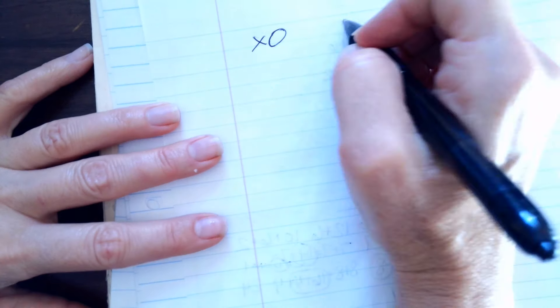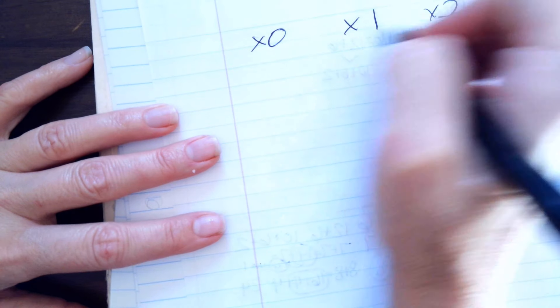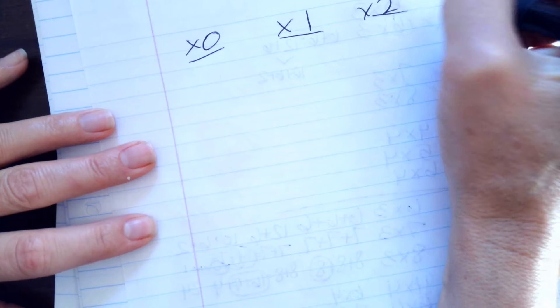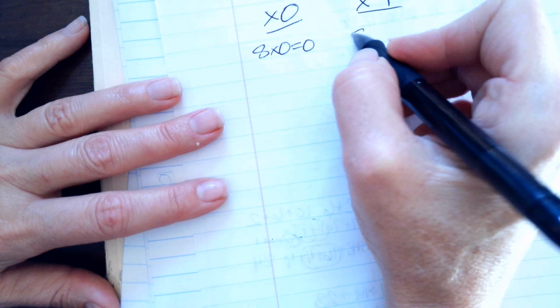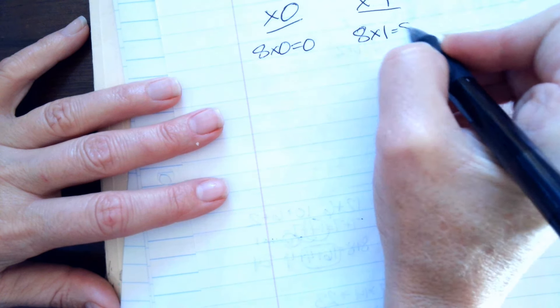I could show you another trick. And then just to go over our times 0 strategy, times 1 and times 2 and times 10. Times 0, anything times 0 equals 0. Anything times 1 equals itself.